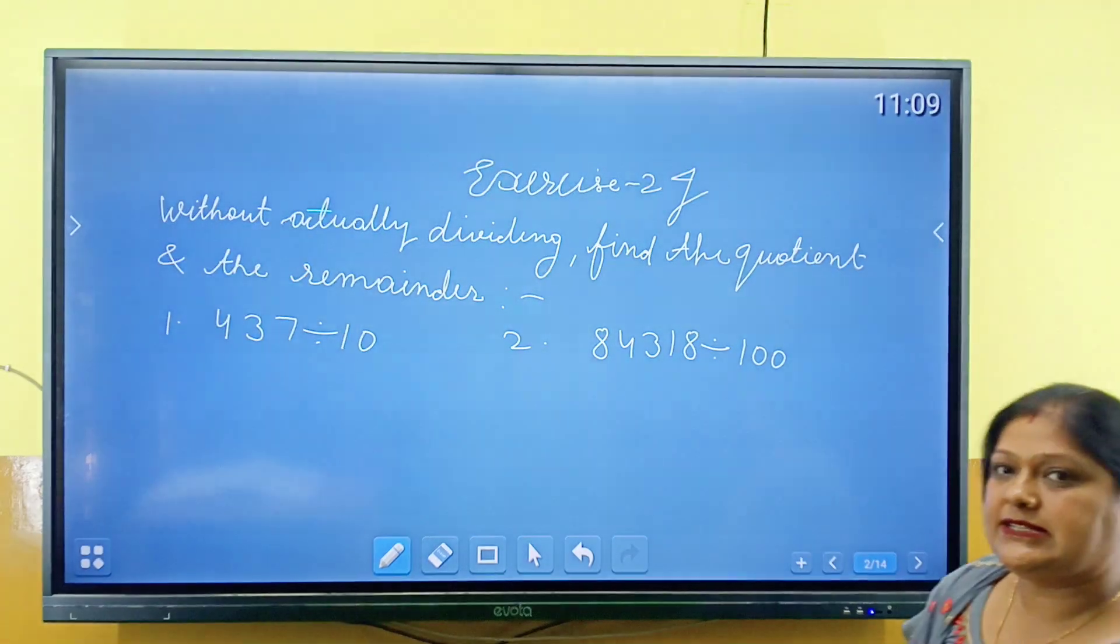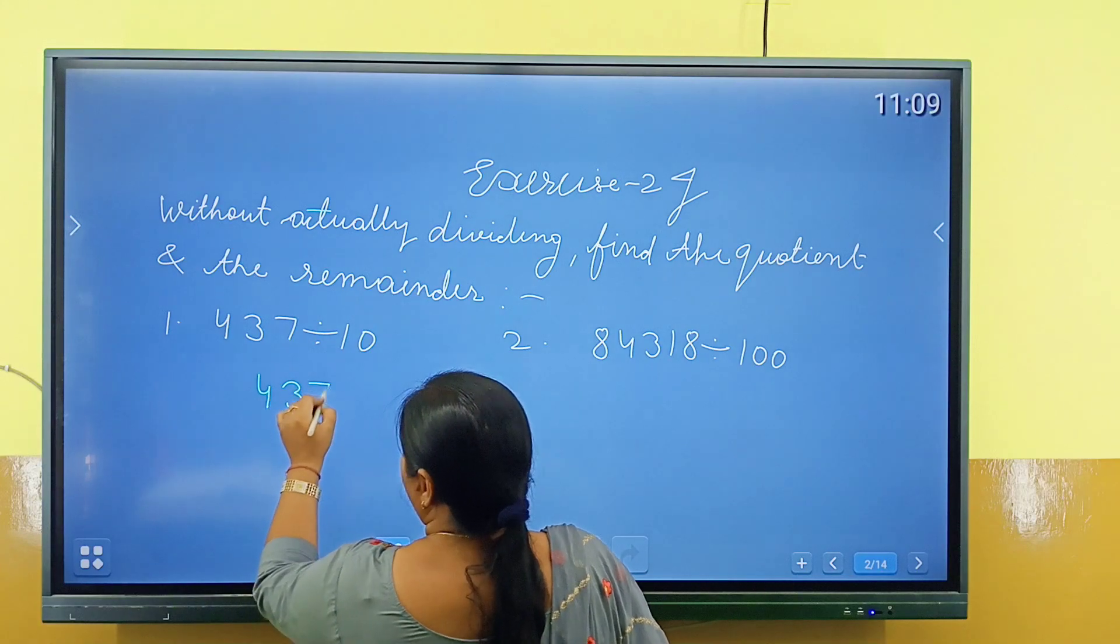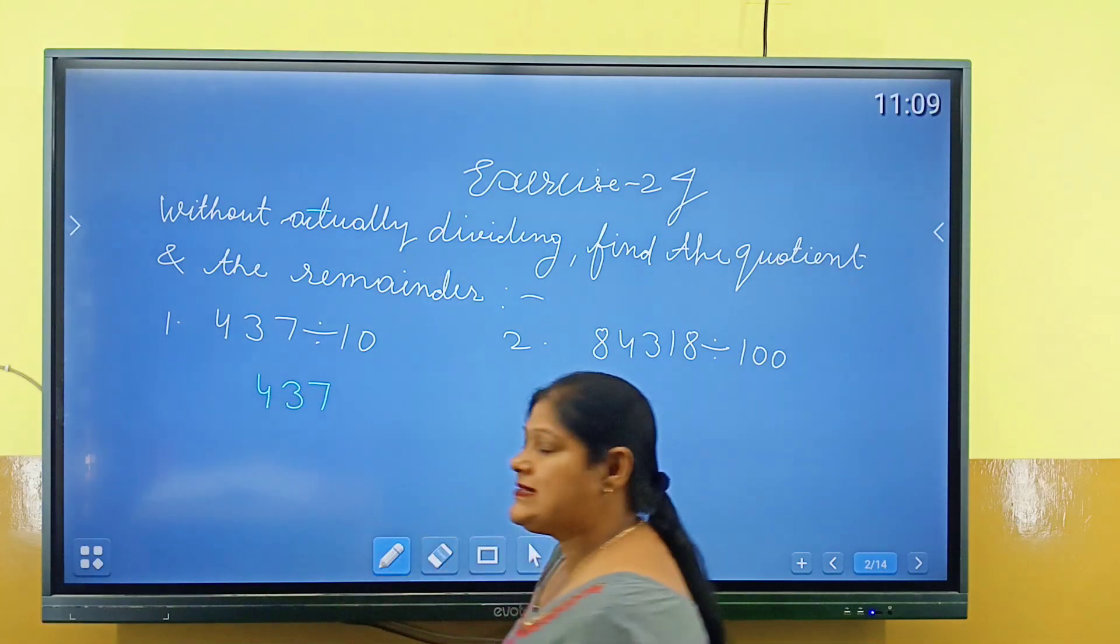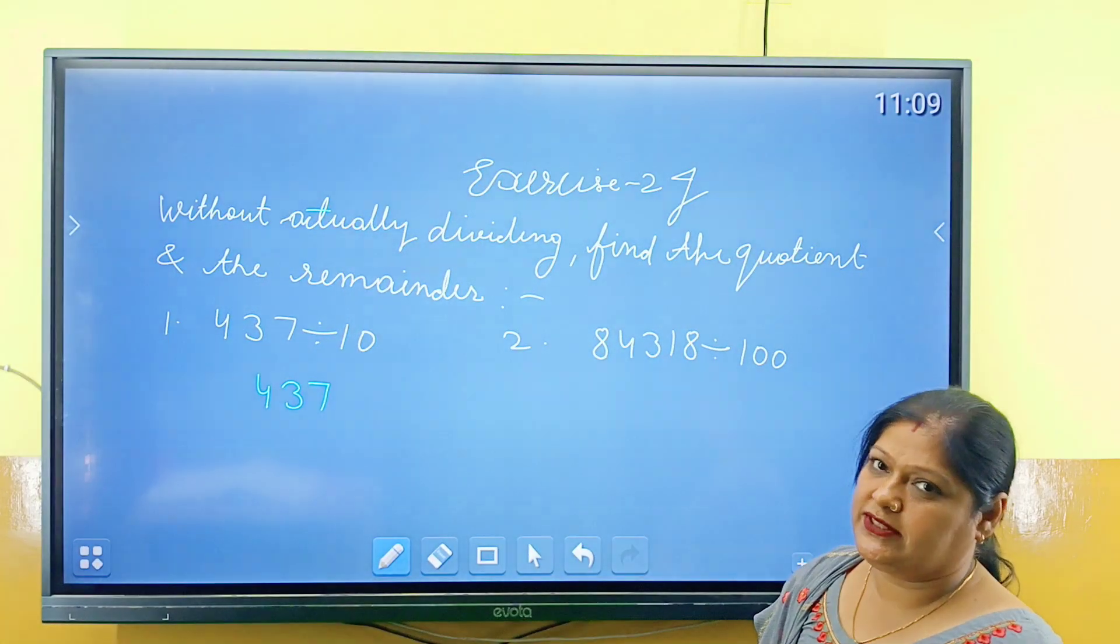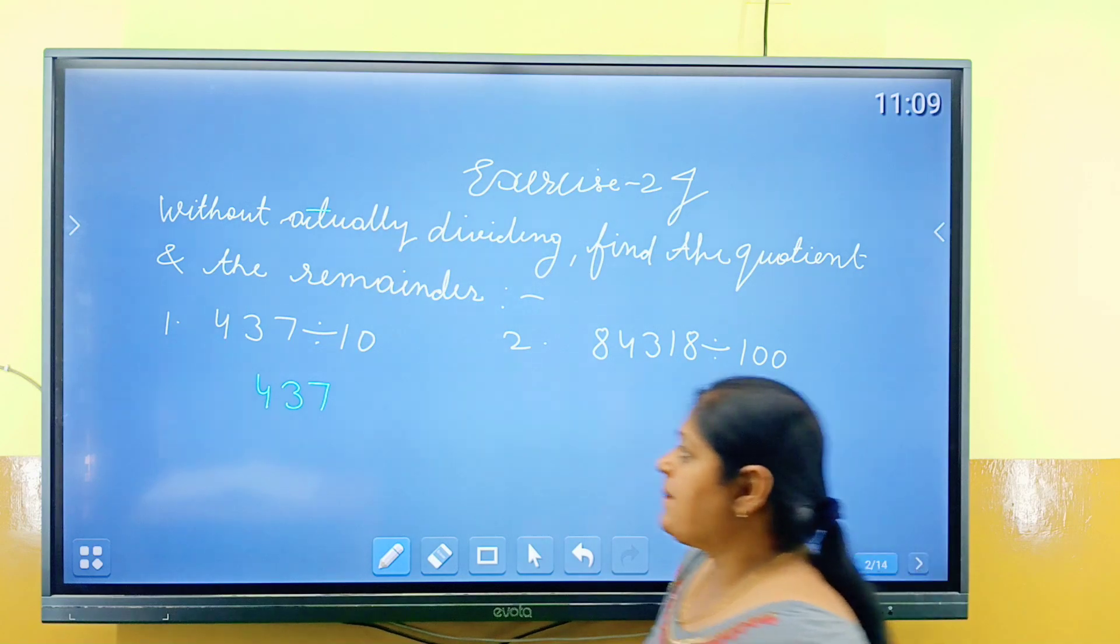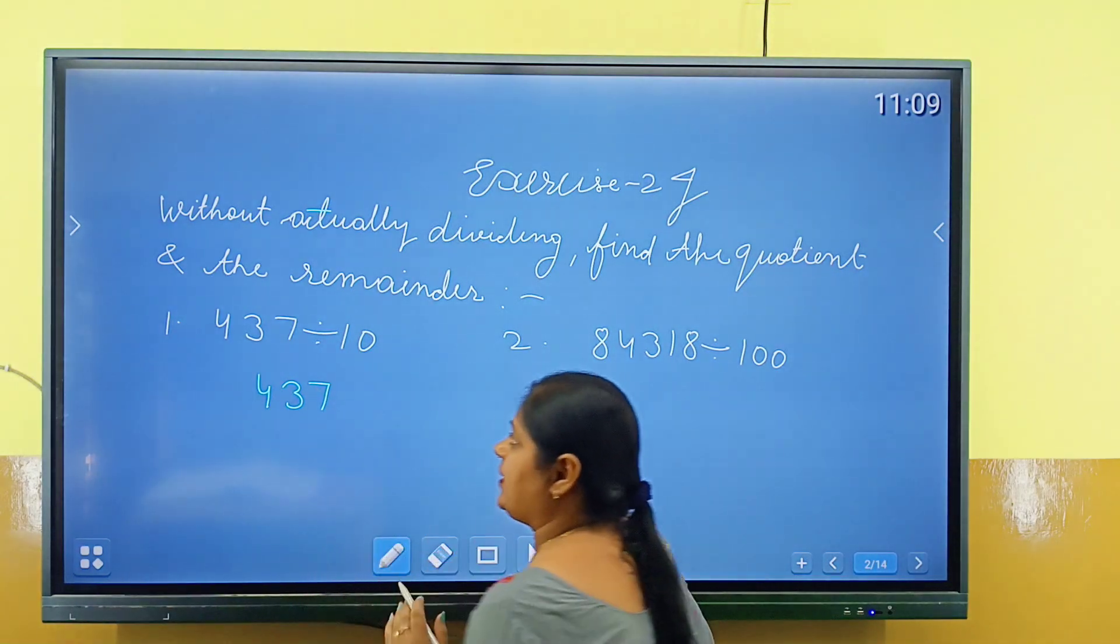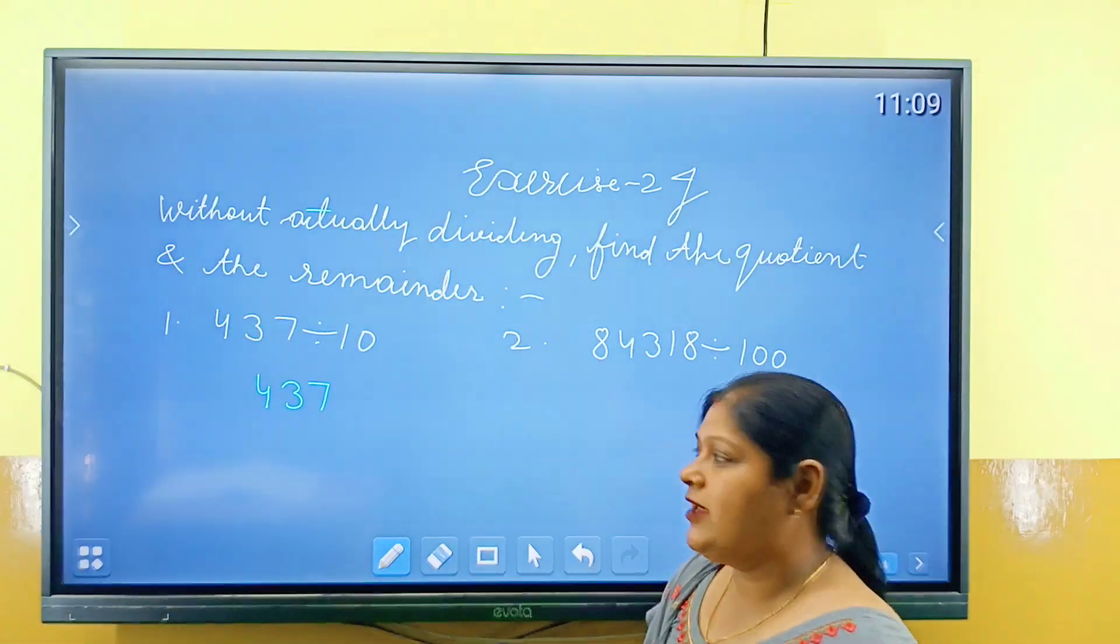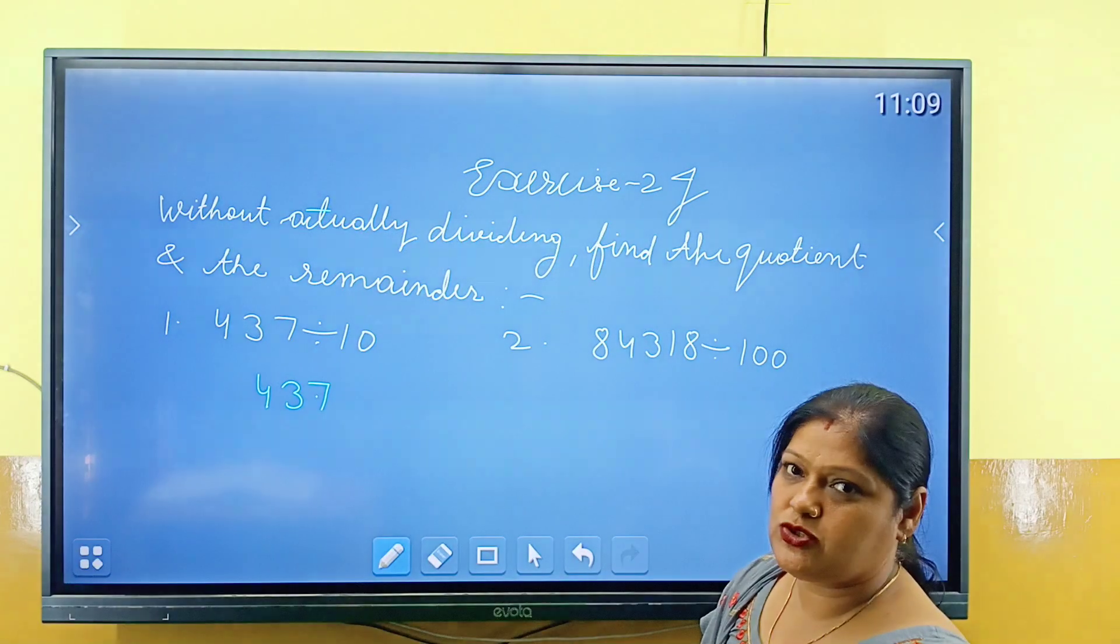First, 437 divided by 10. So students, 437 to 10, if we divide, so 10 students, how many zeros are? One zero. So what do we do? Right side, once place, what do we do? Students, 1 number, point.